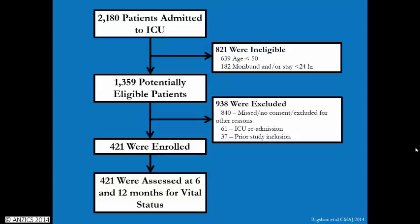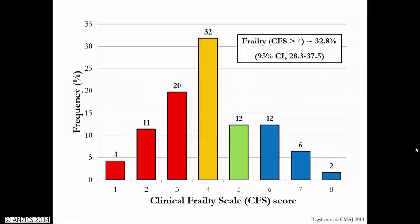We approached close to 2,200 patients, of which about 1,400 were potentially eligible, and ultimately enrolled 421, all of whom had data available on vital status at 6 and 12 months. Interestingly, we found that about one-third of patients were indeed frail — a score of 5 or greater on the Clinical Frailty Scale. Full one-third of patients were also characterized as being vulnerable, meaning two-thirds of the critically ill population in our study were at least vulnerable or overtly frail.